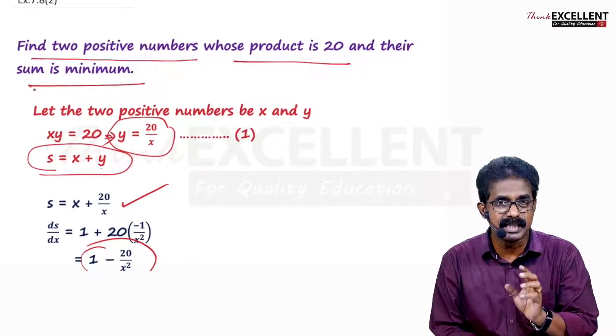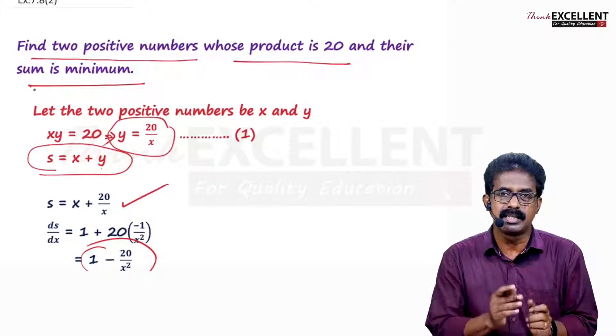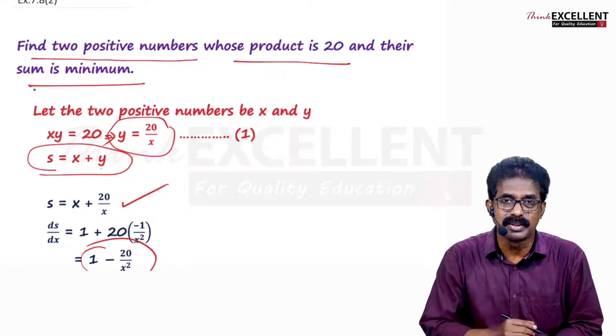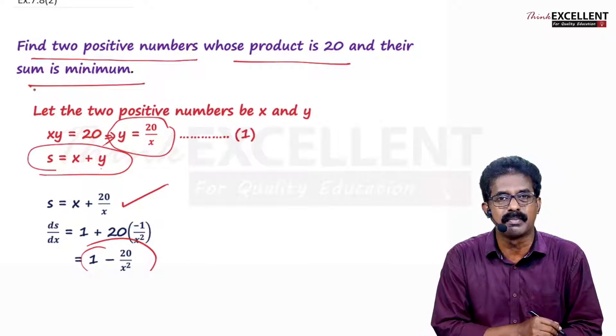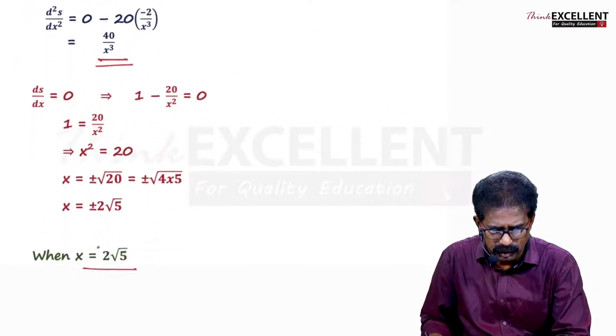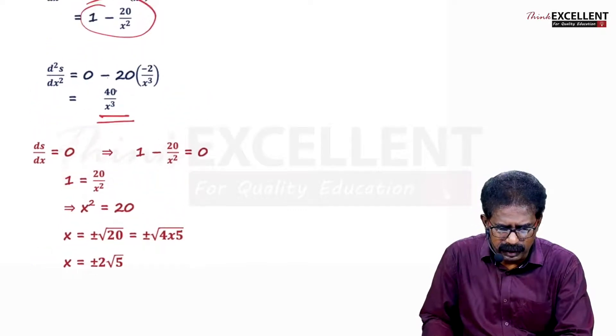You have to prove the sum is minimum. You have to prove S is minimum. How can you prove S is minimum? Second derivative must be positive. Second derivative positive then only you can say sum is minimum. So this x value, what is x value now? 2 root 5. Substitute in the second derivative.